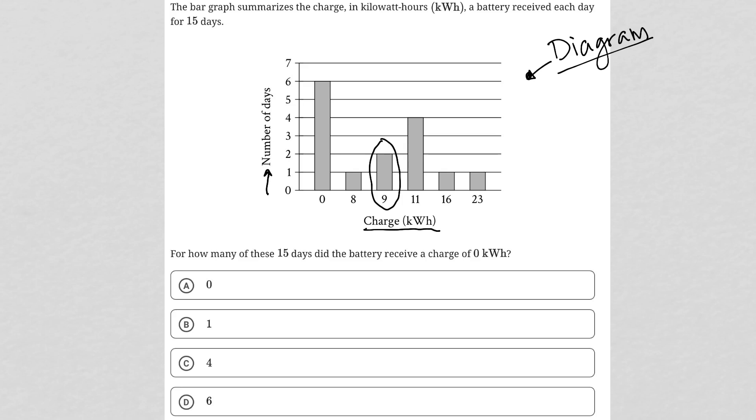Maybe the wording is slightly off, but I do know that this nine kWh charge matches up with two days. So if I can explain that, that means I should be able to understand all the other bars on the same graph.